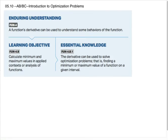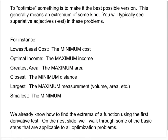All right, this is AP AB and BC Calculus. We are doing Unit 5, Section 10, which is an intro to optimization problems. Essentially, what we're learning here is that because a derivative can be used to find extrema, we can use differentiation in problems that involve optimizing something, which is to say finding the maximum or minimum value of some function in an interval, generally in a word problem setting. To optimize something is to make it the best possible version. This generally means an extremum of some kind. You typically see superlative adjectives like -est in these problems.